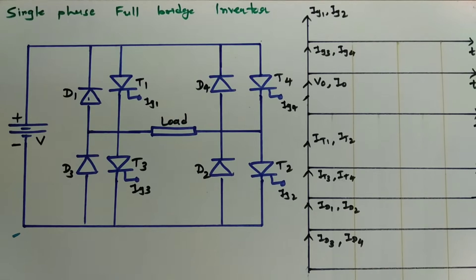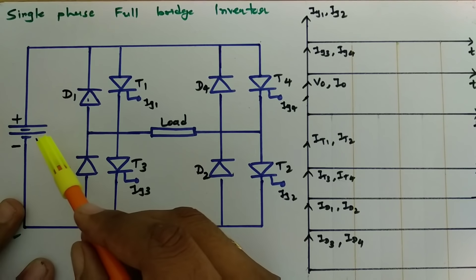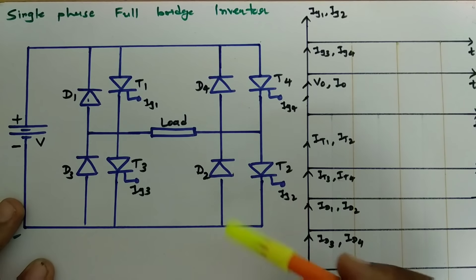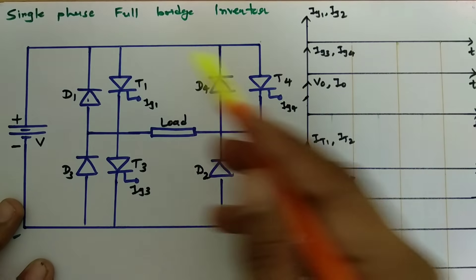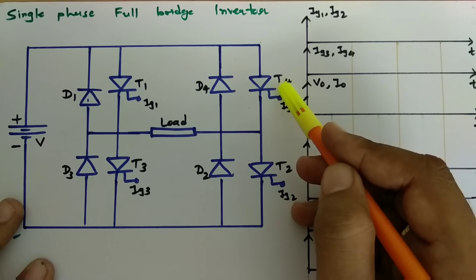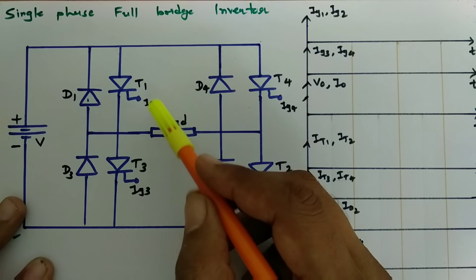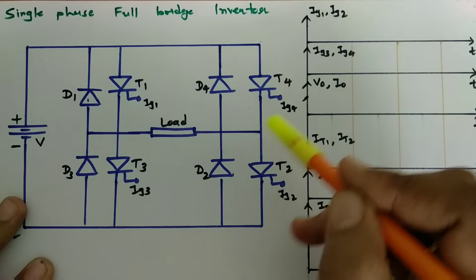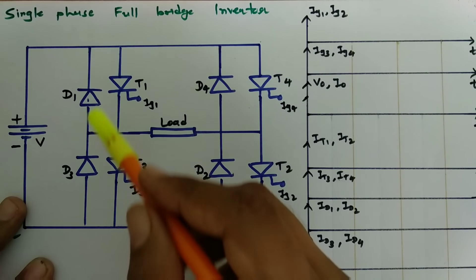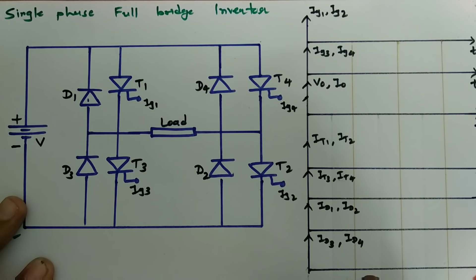Here one can clearly see this inverter is a basic circuit which converts a DC signal into an AC signal. This is the full bridge circuit where T1, T2, T3, T4 are SCRs that are triggered by giving gate pulses IG1, IG2, IG3, IG4. And diodes D1, D2, D3, D4 have been utilized for passing of damped current.